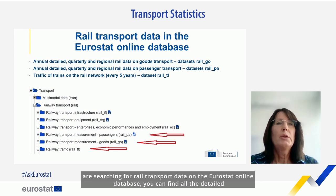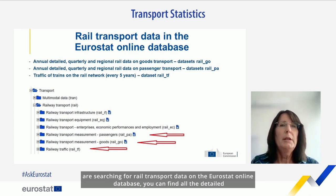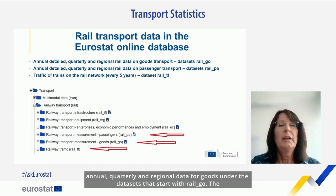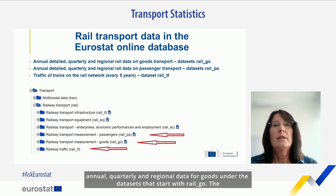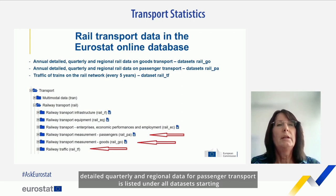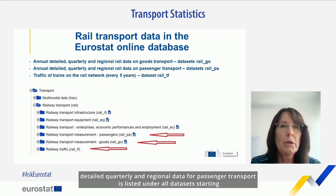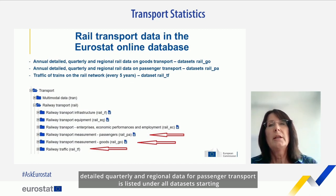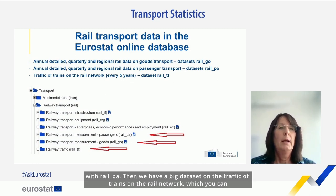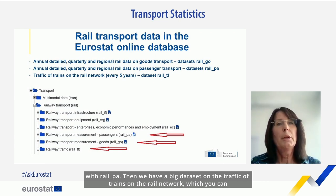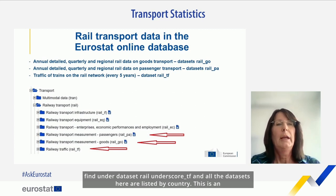If you are searching for rail transport data in the Eurostat online database, you can find all detailed annual, quarterly, and regional data for goods under datasets starting with rail_GO. The detailed quarterly and regional data for passenger transport is listed under datasets starting with rail_PA. Then we have a big dataset on the traffic of trains on the rail network under dataset code rail_TF, with all datasets listed by country.